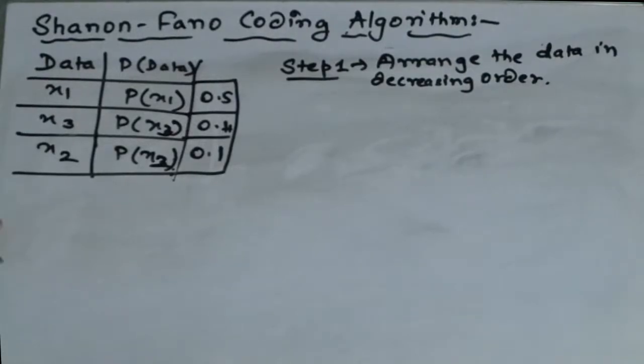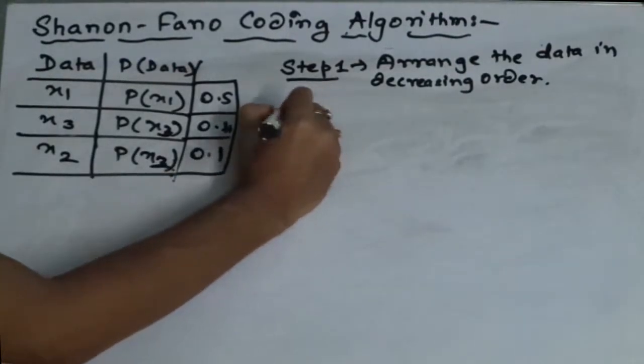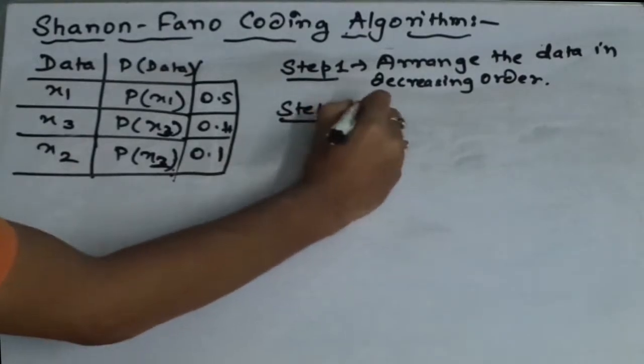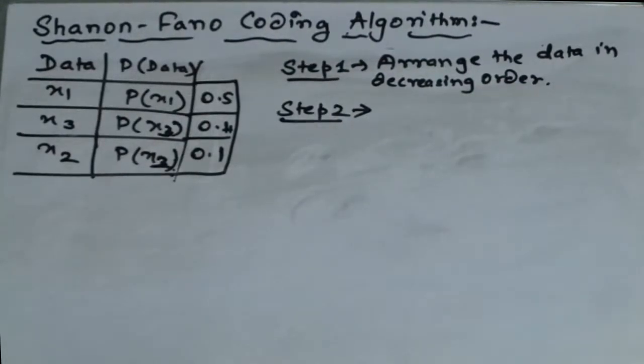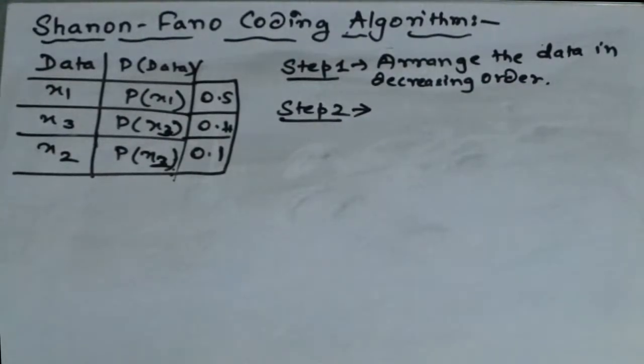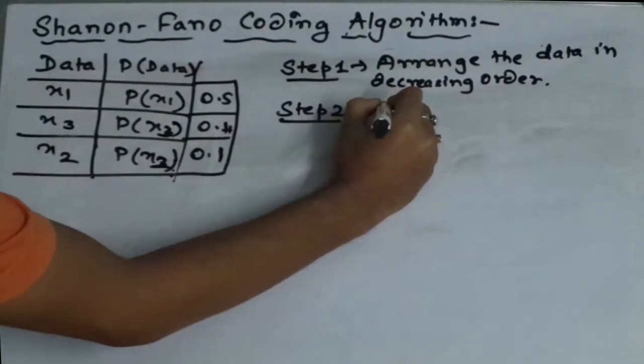Next step, what we have to do, we have to divide this set into two subsets in such a way that the sum of the probabilities are equal or almost equal to one another. I am writing it in words.